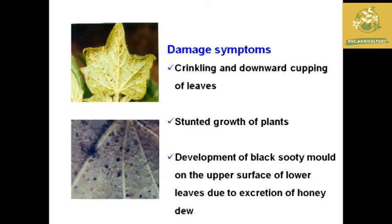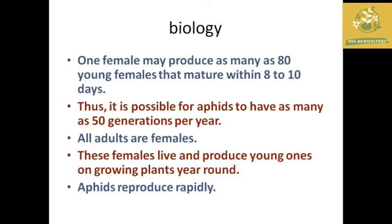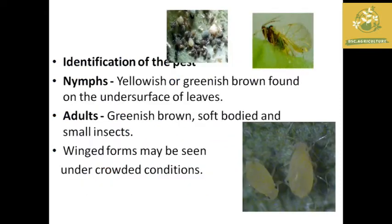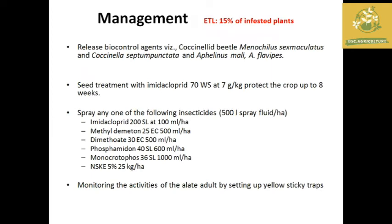One female can produce around 80 young females, which mature within 8 to 10 days, with around 50 generations per year. All adults are females and aphids reproduce rapidly throughout the year. The nymph is yellowish or greenish brown found on the under surface of leaves, and the adult is a greenish brown, soft-bodied, small insect. Winged forms can be seen under overcrowded conditions.